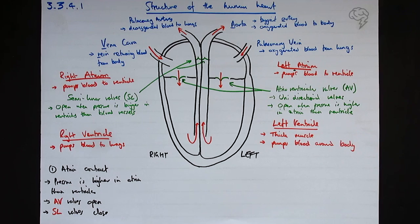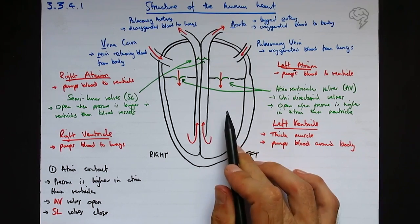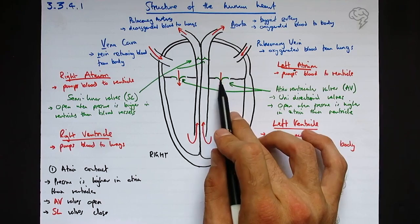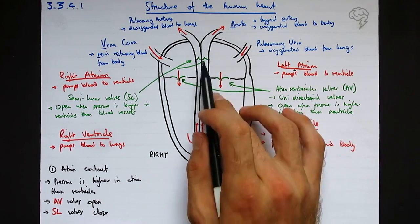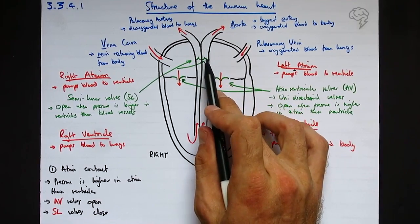The second step: the ventricles contract. That's going to increase the pressure in here, so that means the pressure is higher in the ventricle than the atria. So the atrioventricular valves are going to close. The pressure then is going to be high here and higher here than it is here, so the semilunar valves open.